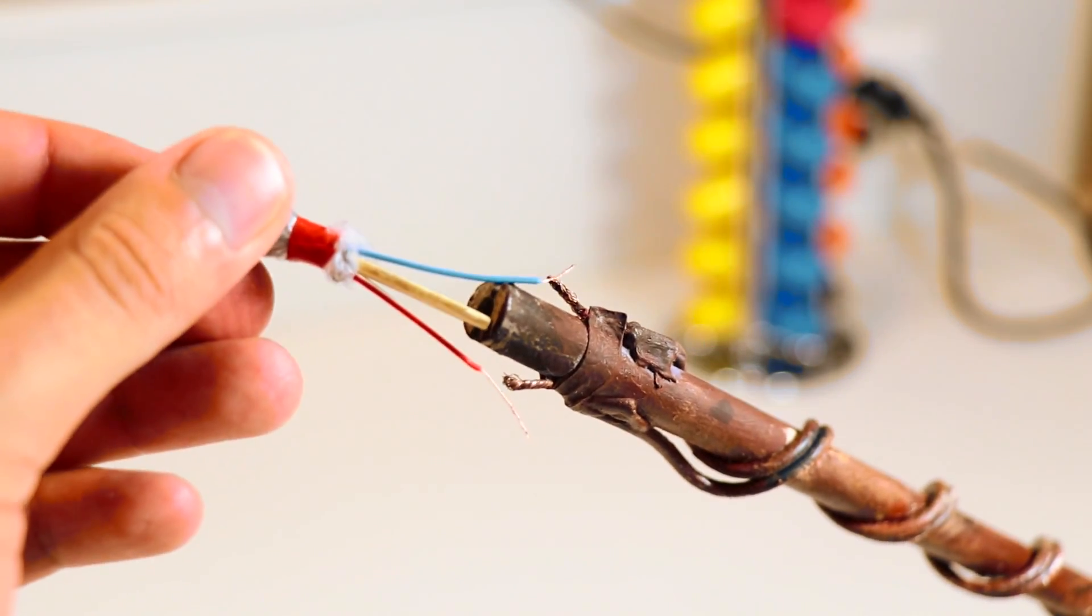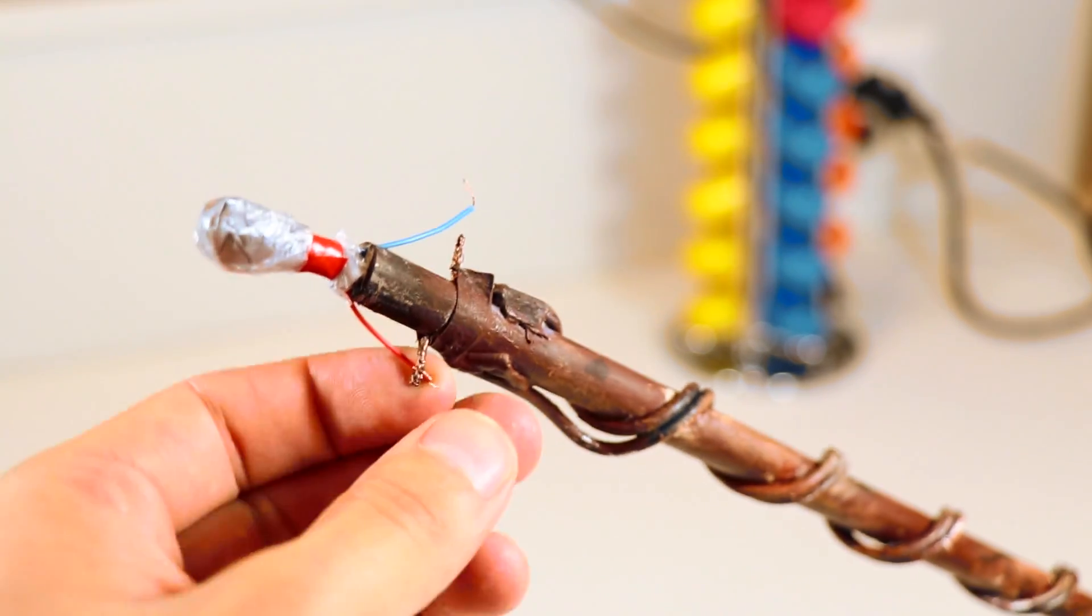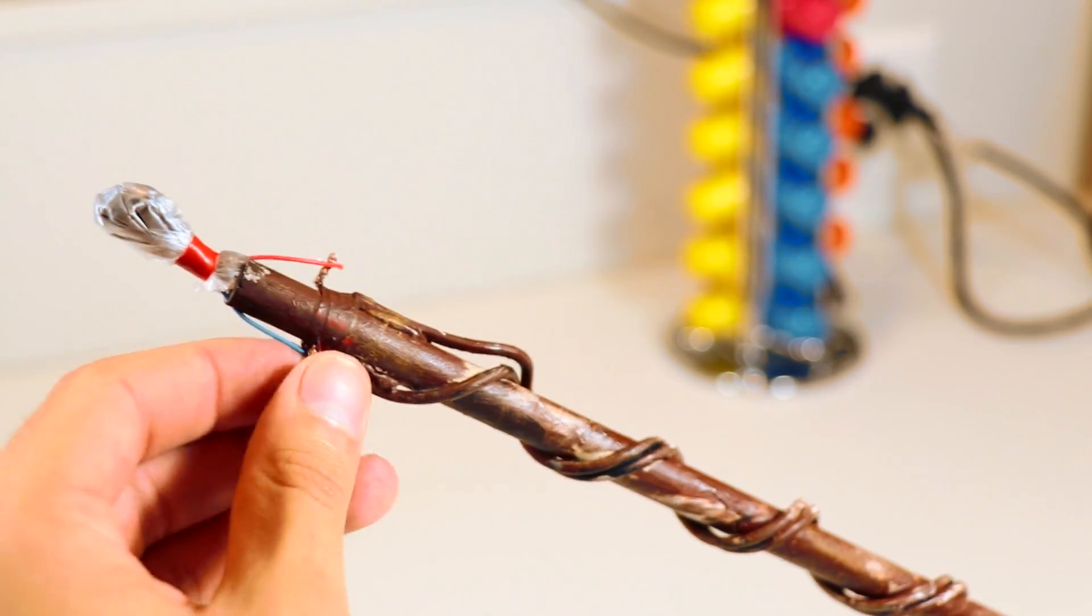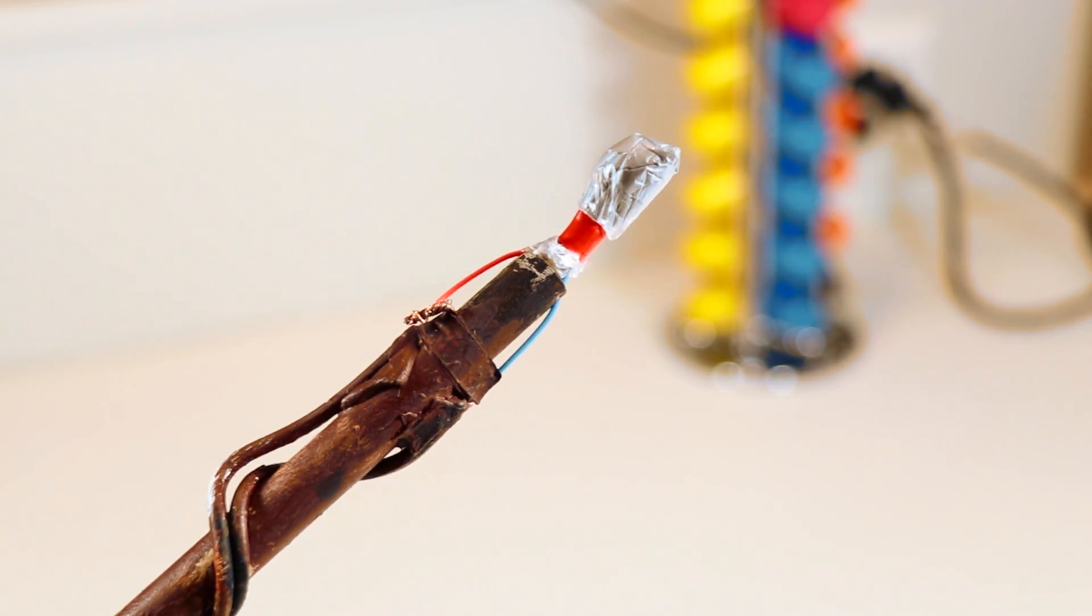And now simply stick it into the wand and then wrap the igniter wires around the wand wires like this. That's it, your wand is all set to go.